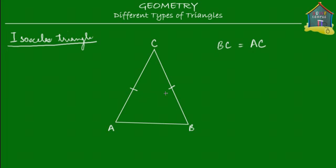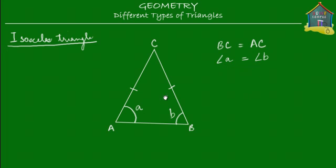A very interesting thing about isosceles triangles is that two of its angles are also equal — specifically the two angles that are opposite to the equal sides. So the two angles opposite to the equal sides are this angle and this angle. If you call this angle A and this angle B, then angle A is equal to angle B. The angle opposite to side BC equals the angle opposite to the other equal side AC, which is angle B.